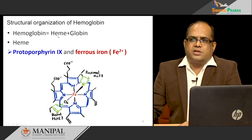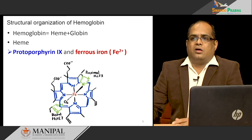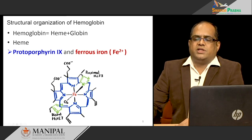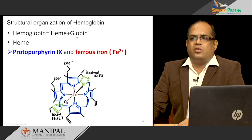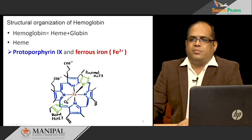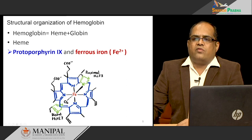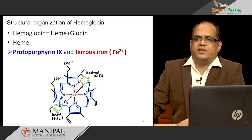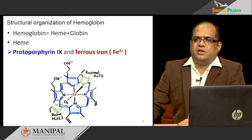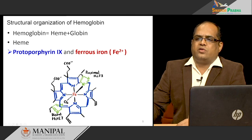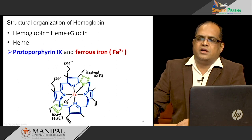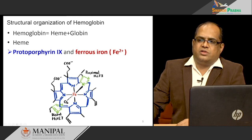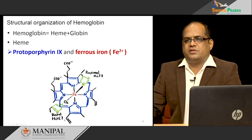Let us move on to how the structure of hemoglobin helps its function. Hemoglobin is a molecule present in the RBCs; it helps in carrying oxygen. It is made up of two parts: heme and globin. Globin is the polypeptide chain made up of amino acids, and heme is a protoporphyrin ring with iron in the ferrous form at the center. The iron forms a coordinate complex with four nitrogens of the protoporphyrin ring and two bonds — one with proximal histidine F8 and one attached to oxygen and then to the distal histidine E7. This is the structure of the heme.